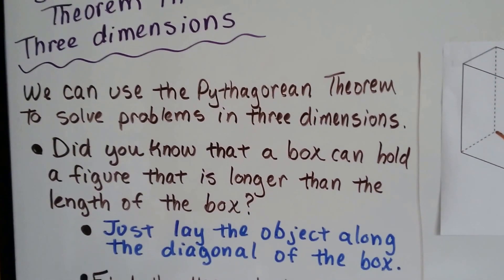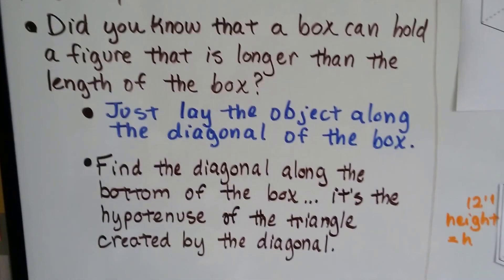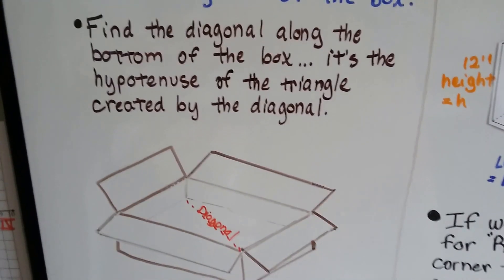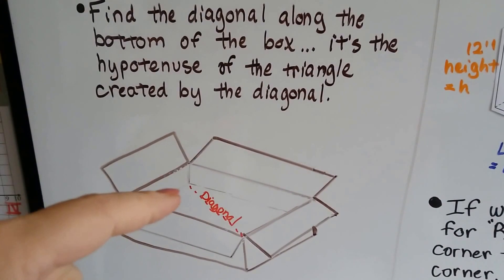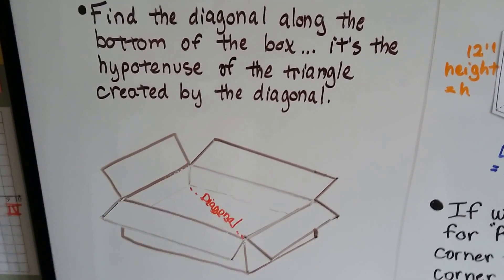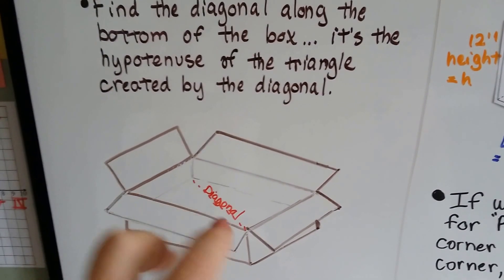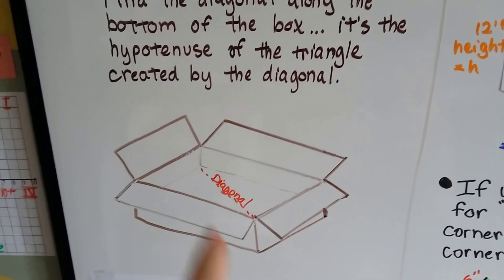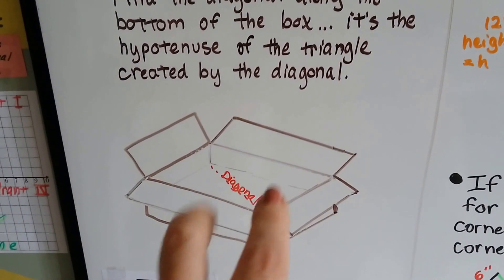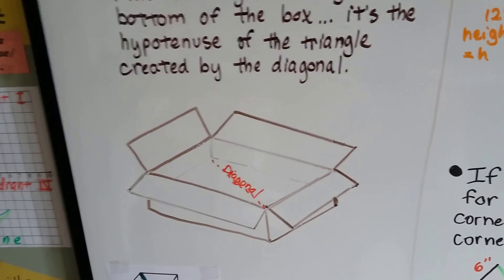Did you know that a box can hold a figure that's longer than the length of the box? You just lay the object along the diagonal of the box. You find the diagonal along the bottom — it's the hypotenuse of the triangle created by that diagonal. There are now two triangles on the bottom. It was one rectangle, but by laying that diagonal there are two triangles, and that diagonal is the hypotenuse.